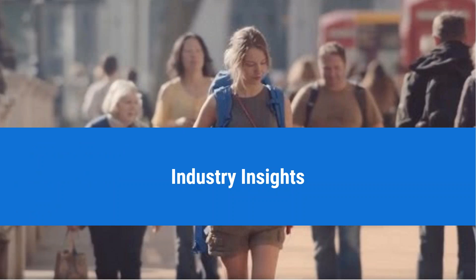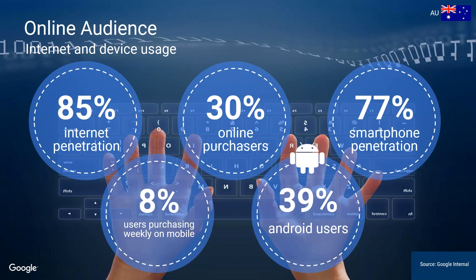Let's dive right into industry insights — what are we seeing within not only the Australian market but the travel industry itself? There is a lot of online activity in Australia. We don't just go online anymore, we actually live online. Out of 23 million people in Australia, 85% have access to the internet, mainly contributed by smartphone proliferation. 77% of internet users have a smartphone. On average, you check your phone 150 times per day — I know for myself I'm probably much higher than that, I actually have two mobile devices.